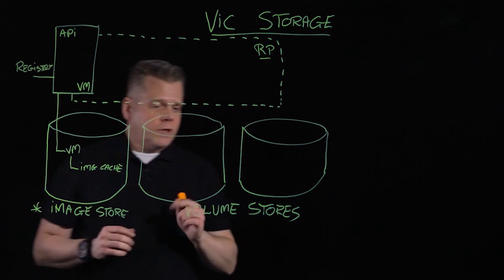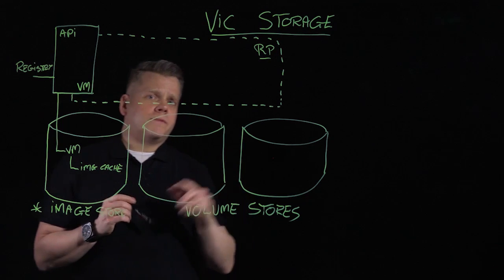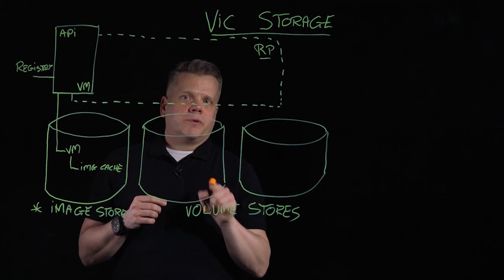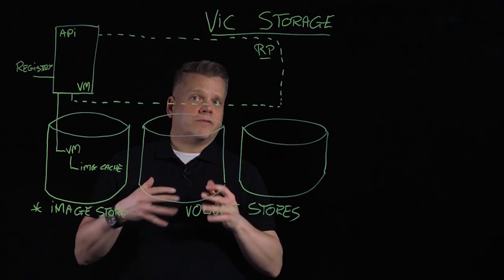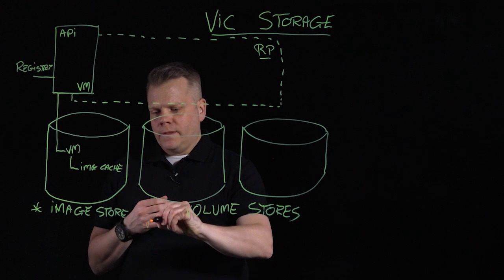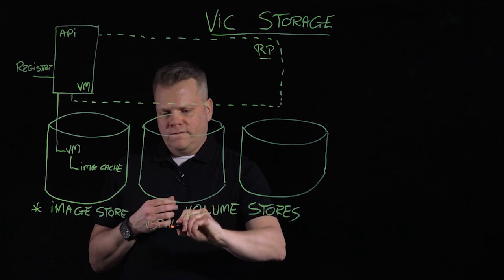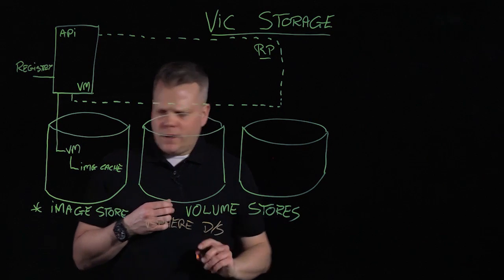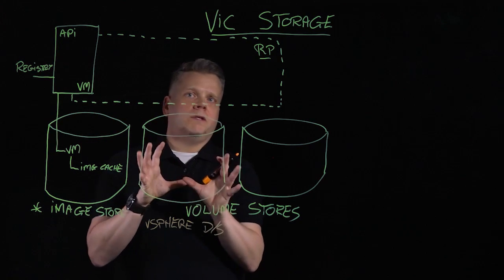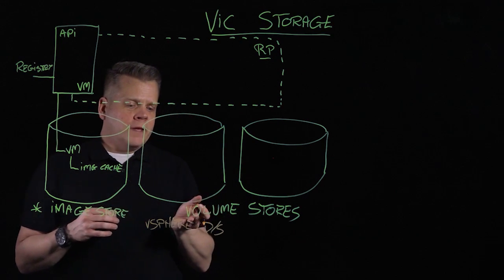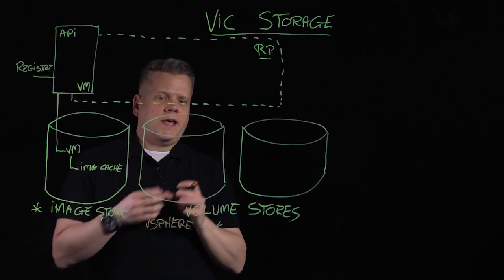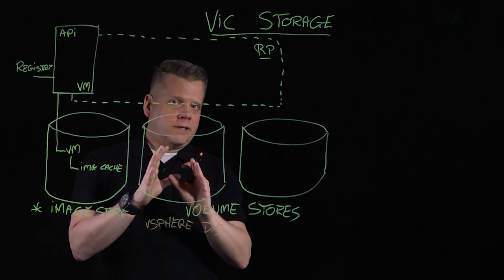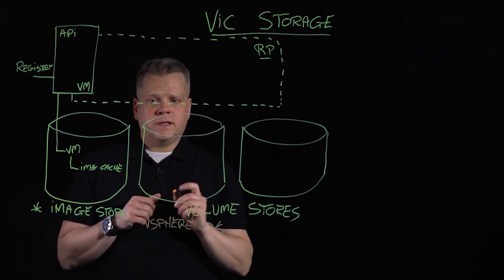The next storage we're going to look at is volume stores, and there are two types in vSphere Integrated Containers. This is where we start creating persistence for actual data in the form of Docker volumes. The first type is the vSphere datastore — I'm specifying a vSphere datastore to be used as my volume store. Since this is a vSphere datastore, I'm creating VMDKs, so every volume created with Docker will get created as a VMDK on this datastore.